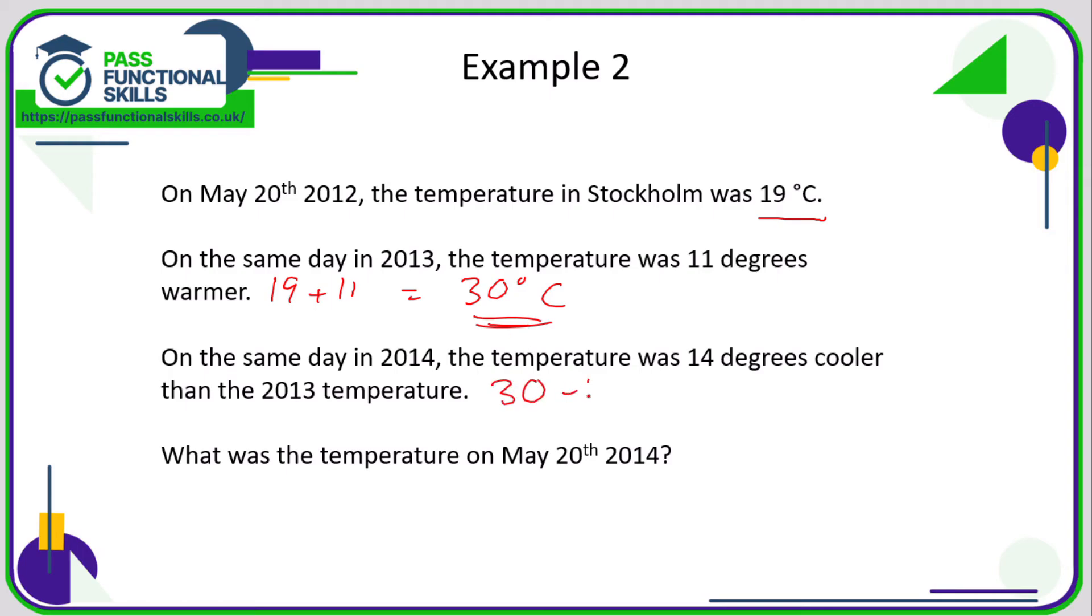So all we need to do now is subtract 14 from 30. 30 minus 14 is 16 degrees, so the temperature on May 20th 2014 must have been 16 degrees.